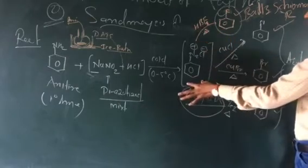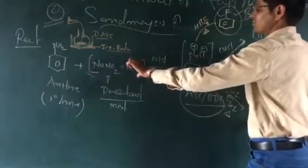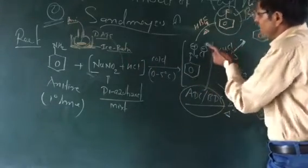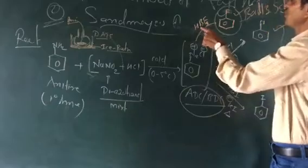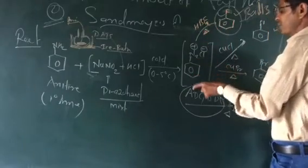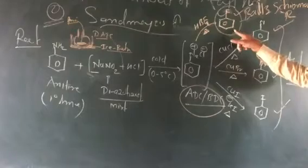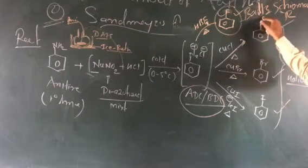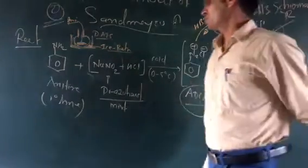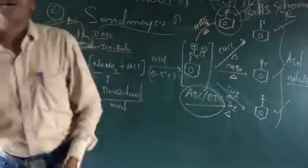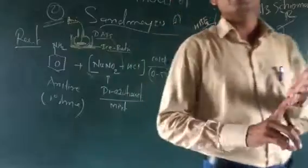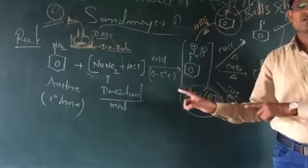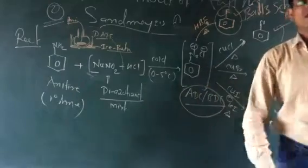The second reaction is the Balz-Schiemann reaction: aniline is converted to ADC or BDC, and this reacts with HBF4 to form fluorobenzene. So we have completed the formation of halobenzenes — aryl halides — through halogenation (yesterday), the Sandmeyer reaction, and the Balz-Schiemann reaction.